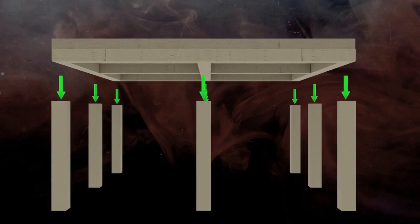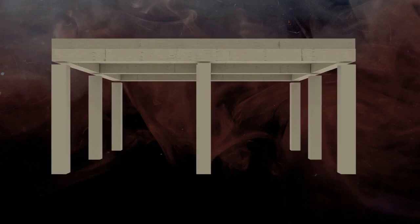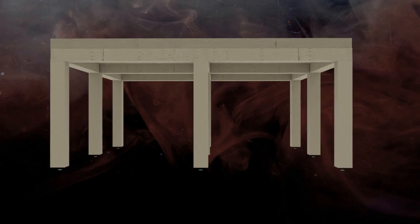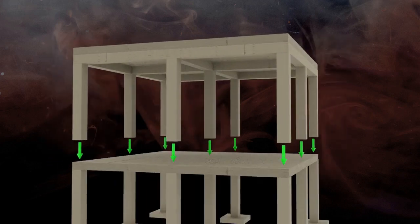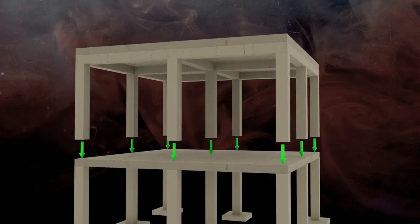Columns are considered the most important members of a building because if other members fail it may not be too dangerous, but failure of a column would lead to total collapse of the building. Finally, the columns transfer all the superimposed loads to the foundation below.